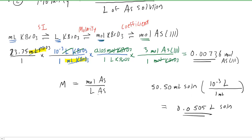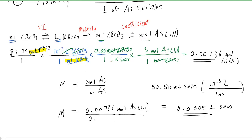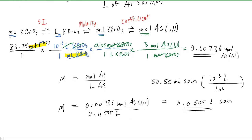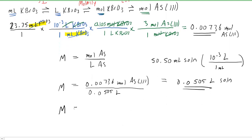We plug the moles from step one into the numerator and the liters of arsenic solution into the denominator. Dividing those two quantities, we obtain the molarity, which turns out to be approximately 0.146 moles per liter — or 0.146 M.